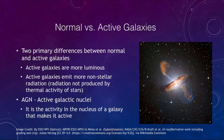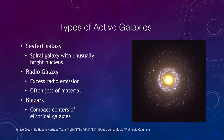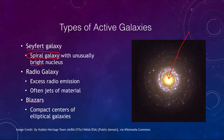Let's look at some examples of types of active galaxies. One example is what we call a Seyfert galaxy. These are essentially spiral galaxies with an unusually bright nucleus — much brighter than we would normally expect for a typical spiral galaxy. This can often be associated with extensive bursts of star formation, so you can sometimes see intense regions of star formation around the nucleus as well.